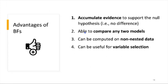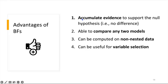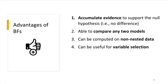Some advantages of Bayes factors: First, we can accumulate evidence to support the null hypothesis of no difference. This contrasts with frequentist null hypothesis significance testing, where p-values cannot accumulate evidence supporting the null — one can only reject or fail to reject it, never accept it. Second, we can compare any two models, looking at evidence in support of either model relative to the other. Third, Bayes factors can be computed on non-nested models, using the same or different parameter sets across the two models.